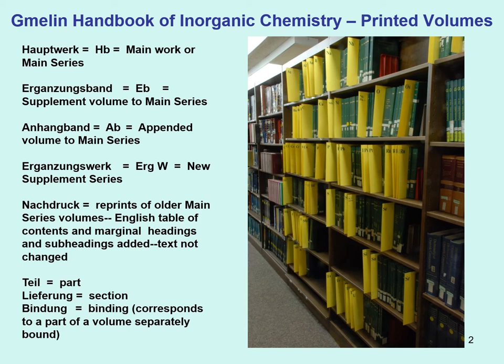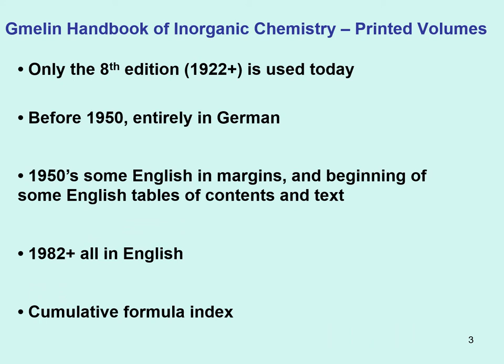You see the German abbreviation, which is often the only text on the spine, along with the English translation — useful for noting which book you used so you can go back to it. Of the many editions, only the eighth edition, which started in 1922, is used today. That's all you will see in any library.